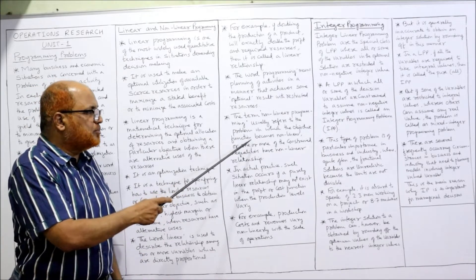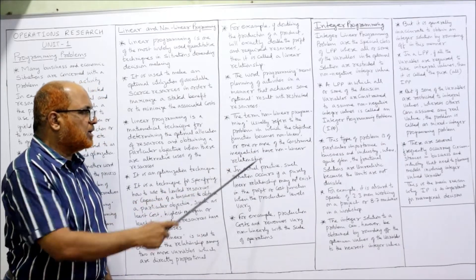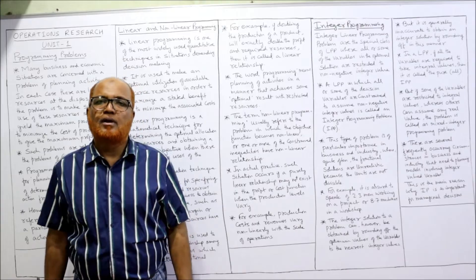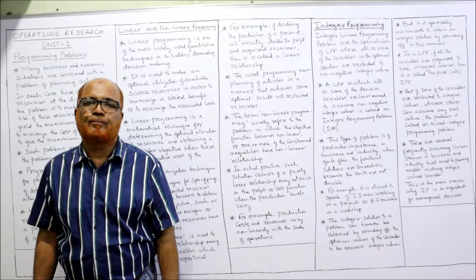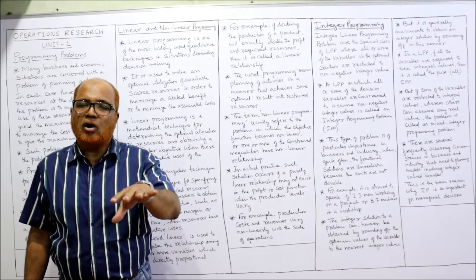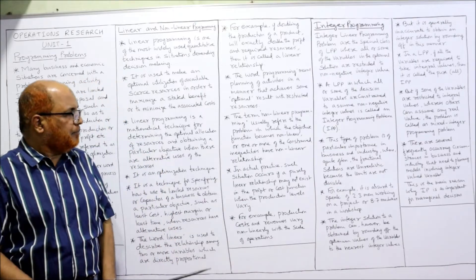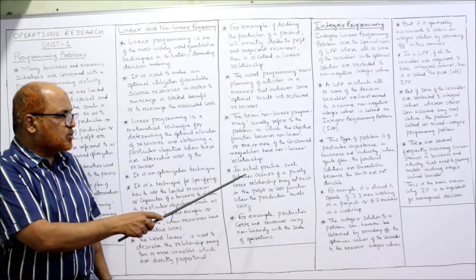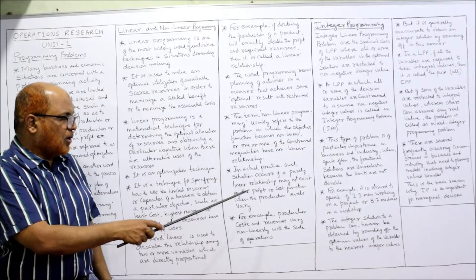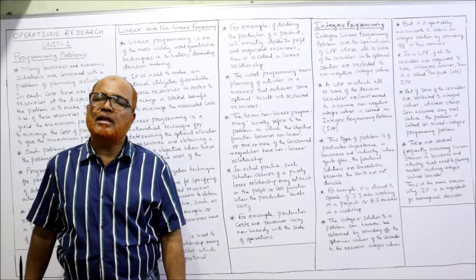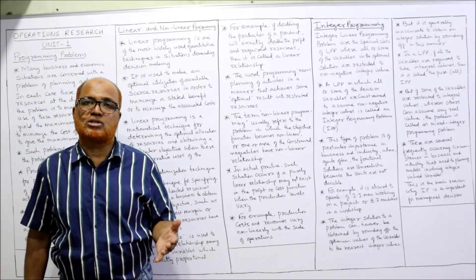When the relationship among variables is not directly proportional, we call it non-linear programming. Non-linear programming usually refers to problems in which the objective function is non-linear, or one or more of the constraint inequalities have a non-linear relationship. In actual practice, a purely linear relationship may not exist in the profit or cost function when production levels vary.